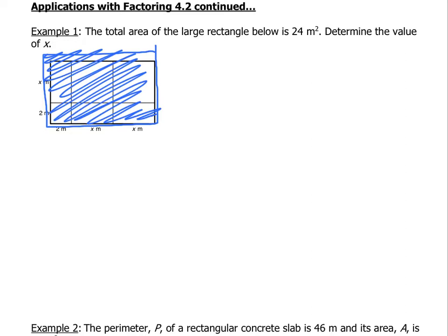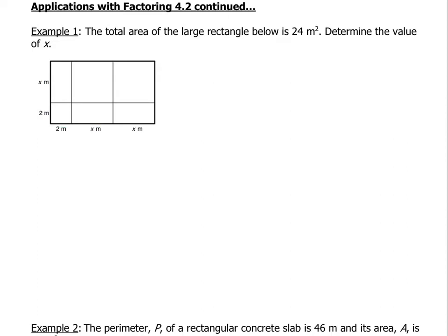In order to do that, we need to take the information that we know and try to figure out the information that we don't know. We know from way back when that to find the area of a rectangle, we use the formula A equals length times width.